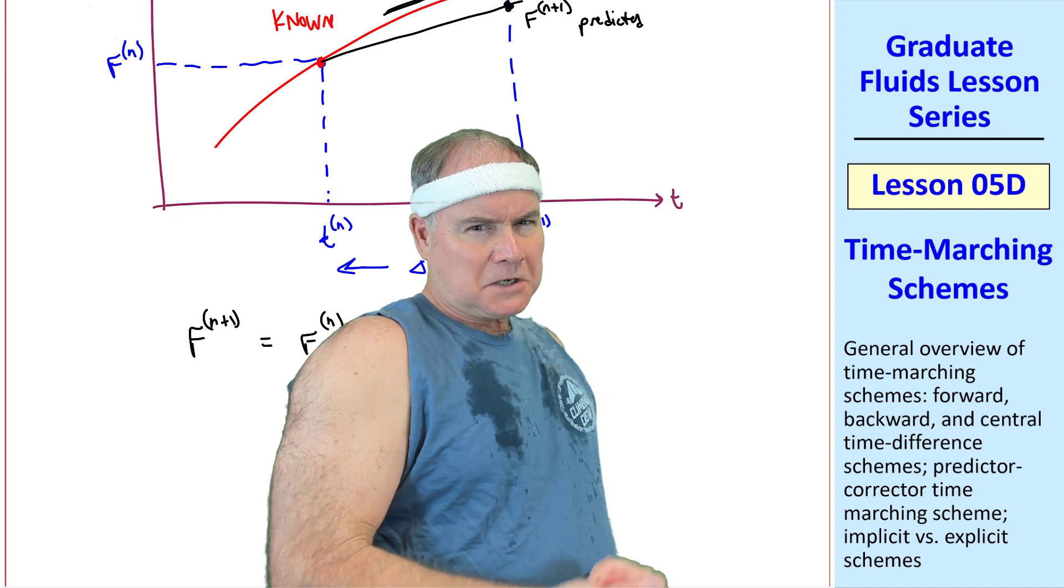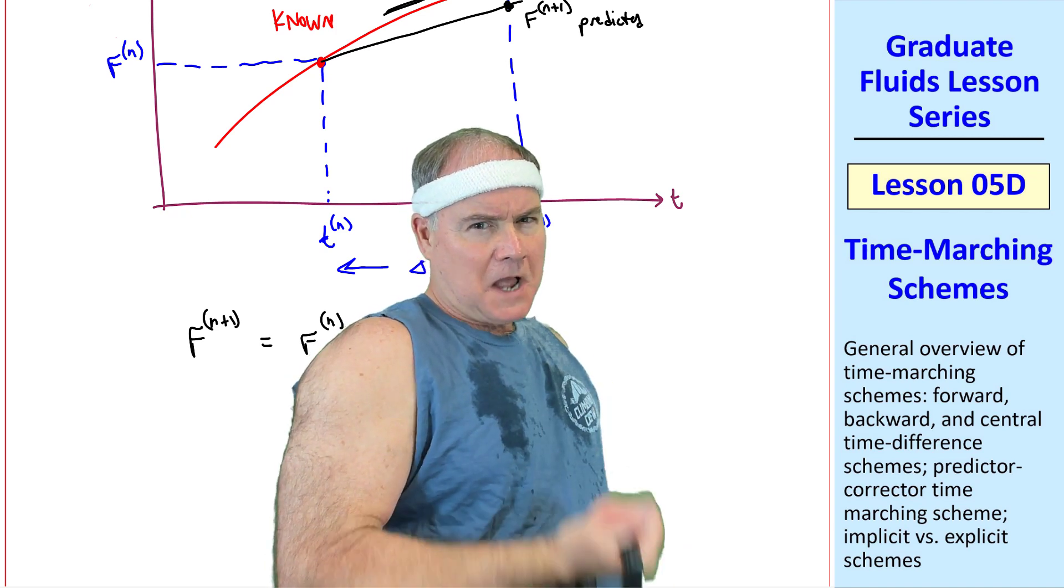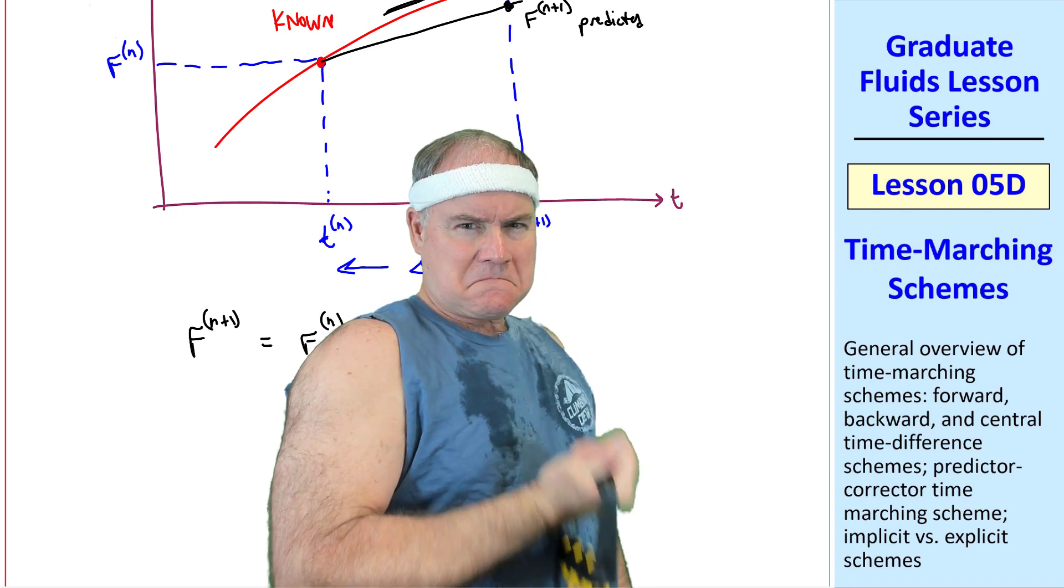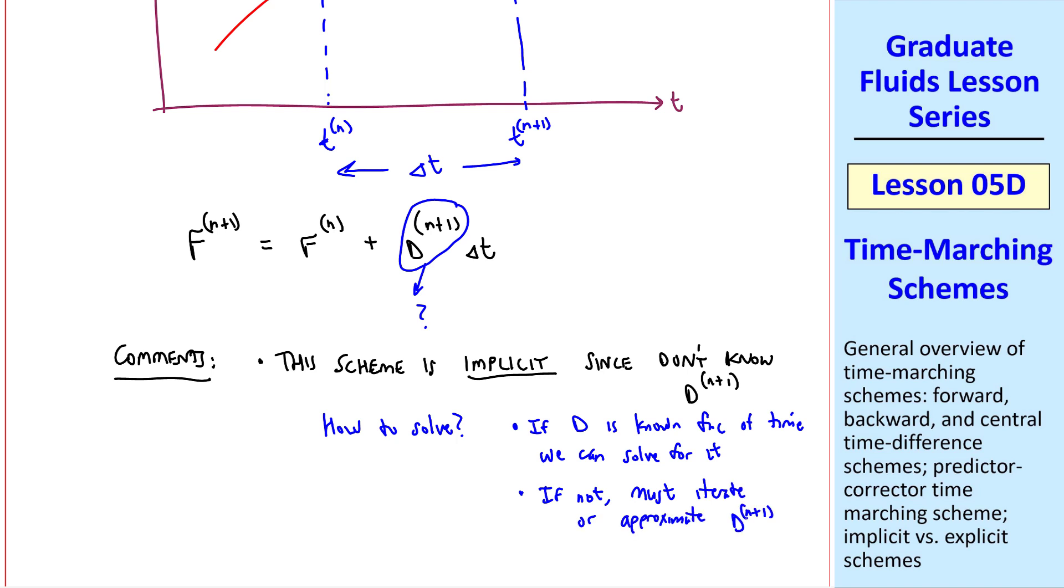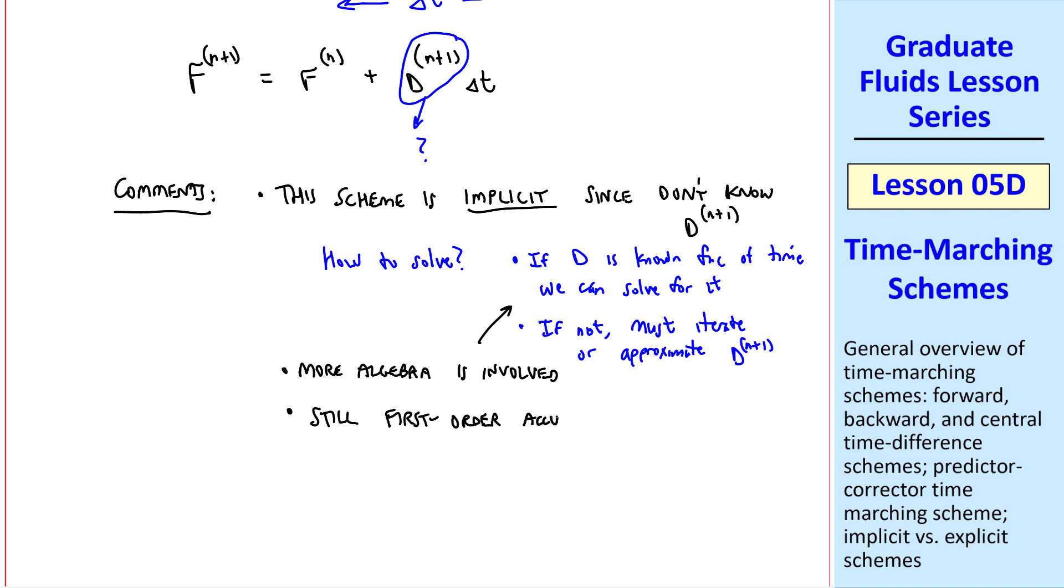But how can we know the slope if we don't even know the function at n plus 1? Good question, Arnold. We may not know dn plus 1. So here are some comments. This scheme is implicit, since we don't know the derivative at time step n plus 1. How to solve it, then? If D is a known function of time, we can just solve for it. If not, you typically must iterate or approximate dn plus 1. More algebra is involved. It's still first-order accurate. The advantage, however, is that it's unconditionally stable, which means delta t can be large and it won't go unstable. Whereas the forward-marching scheme can be unstable for large delta t.